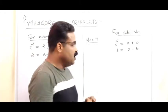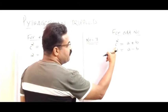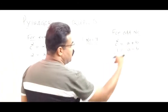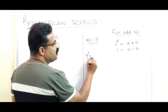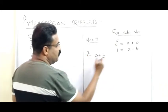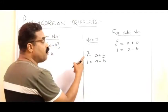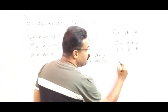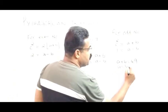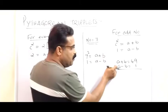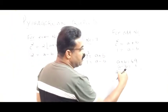For an odd number, we use: c² = a + b and 1 = a − b, where c is the given number. So seven squared is equal to a plus b, and a minus b equals 1. Seven squared is 49, so a + b = 49 and a − b = 1. Adding both equations, the b's cancel and we get 2a.